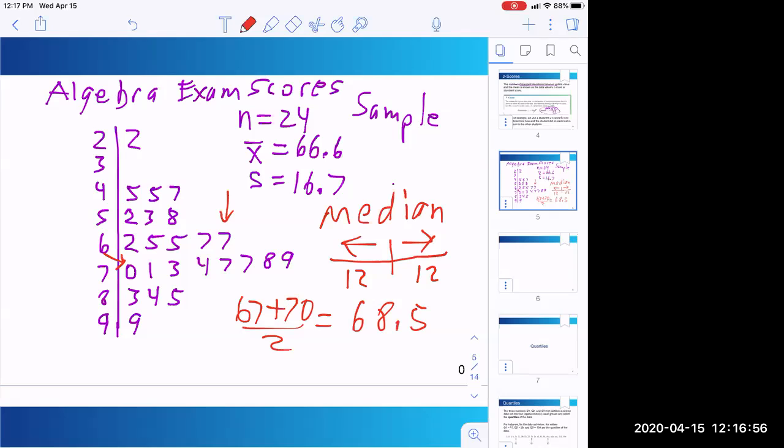It's also a measure of central tendency. Notice it's a little bit higher than the mean because this 22 is a possible outlier. It's affecting the mean because it's bringing the mean down because you're not adding that much to the total. Whereas the median, remember, it doesn't matter about outliers. It's just sitting in here cutting our data in half.